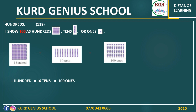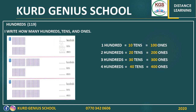Look at these examples — go to page 119. The first example: 100 is 10 tens and 100 ones, but here we have 10 tens and another 10 tens, so this is 100 and this one is another 100. It means we have two hundreds. Three hundreds equals 20 tens.